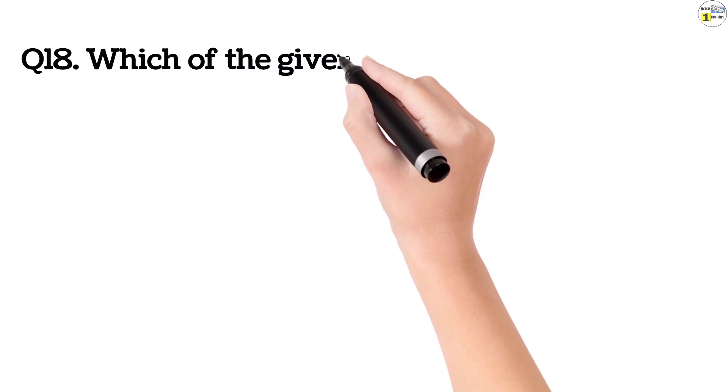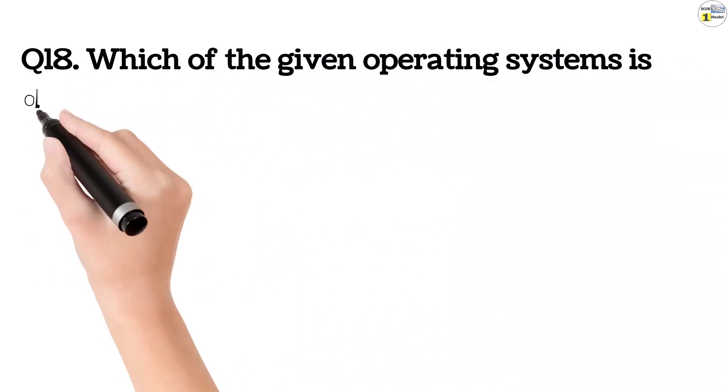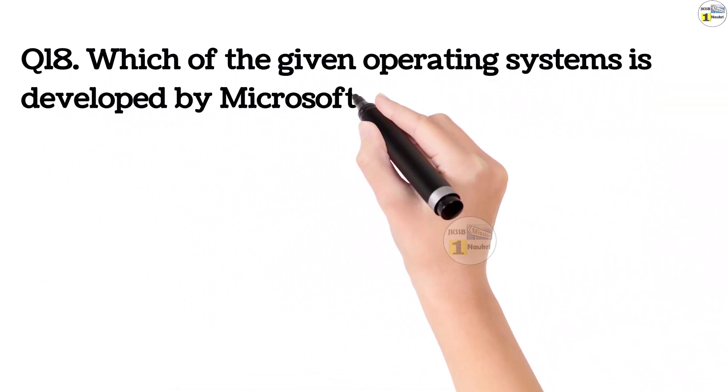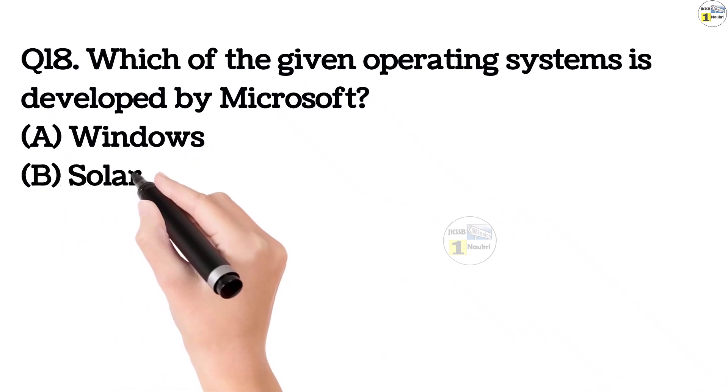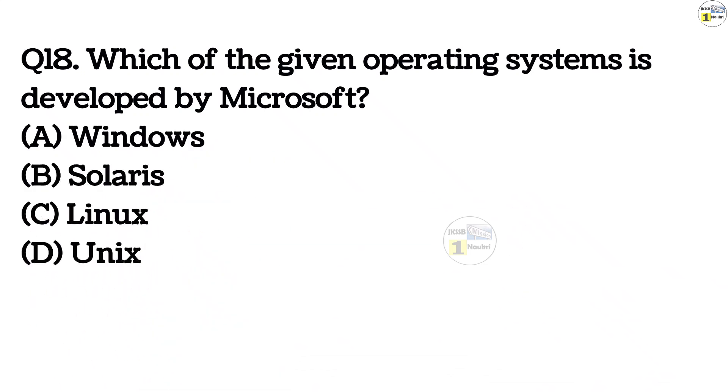Question number 18. Which of the given operating system is developed by Microsoft? Option A, Windows. Option B, Solaris. Option C, Linux. Option D, Unix. This answer is Windows operating system. This has been developed by Microsoft's company.